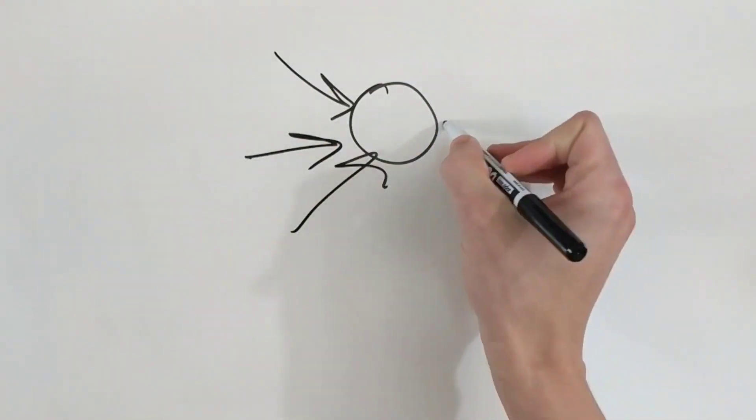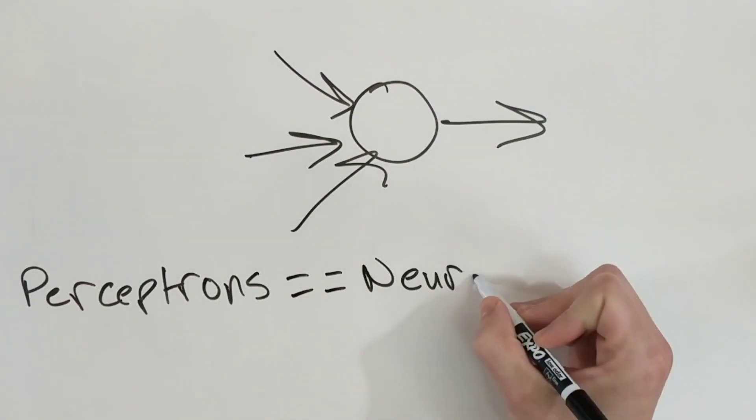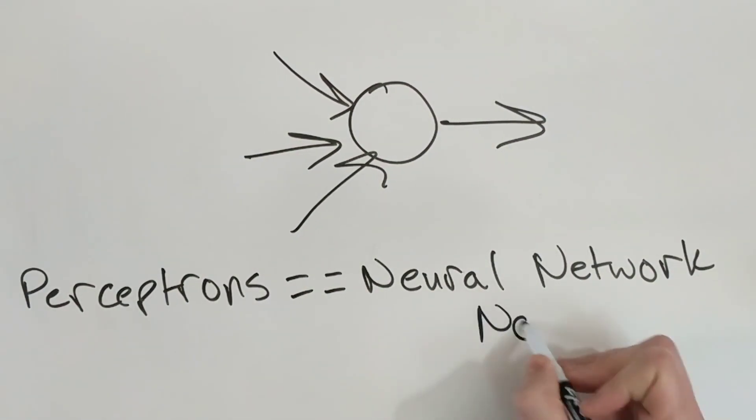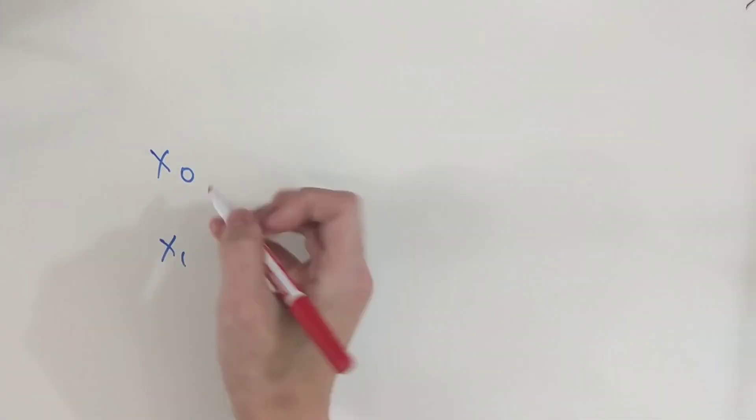Perceptrons are just neural networks with a single output node, so how a perceptron works and how a neuron in a neural network works are the exact same.